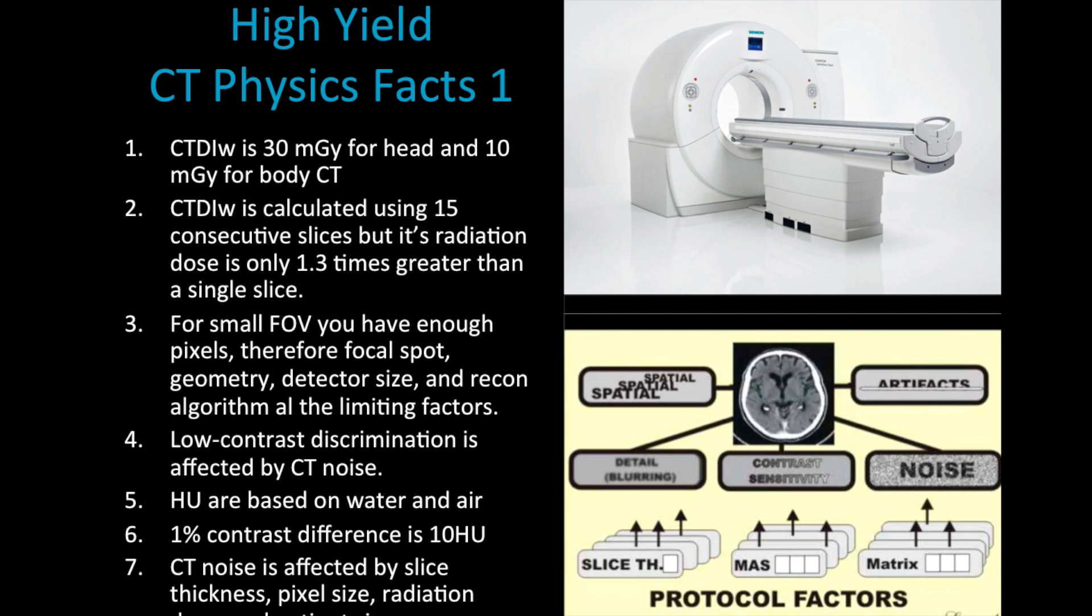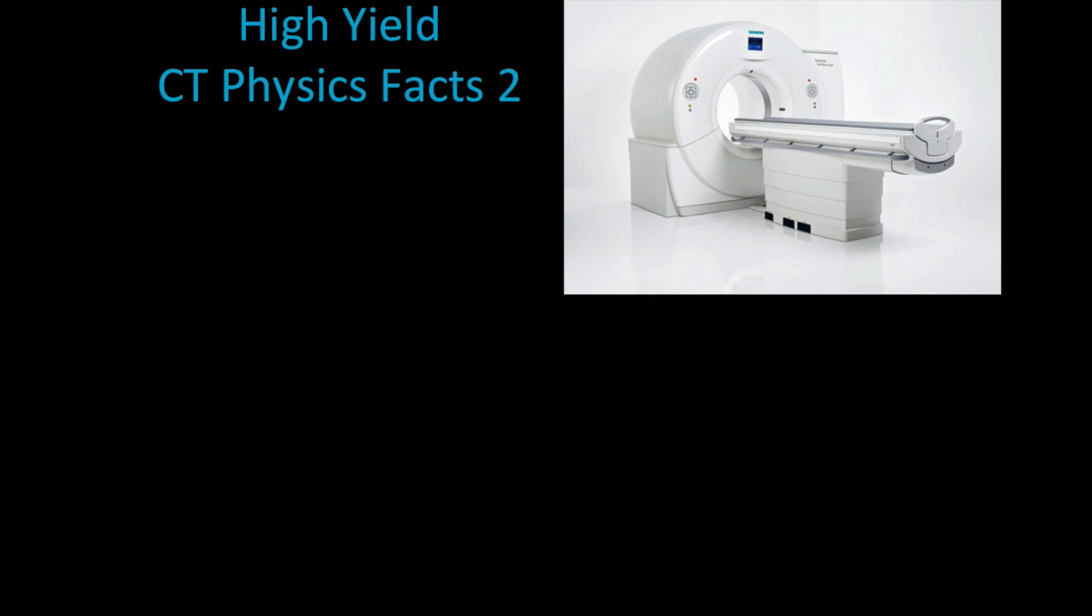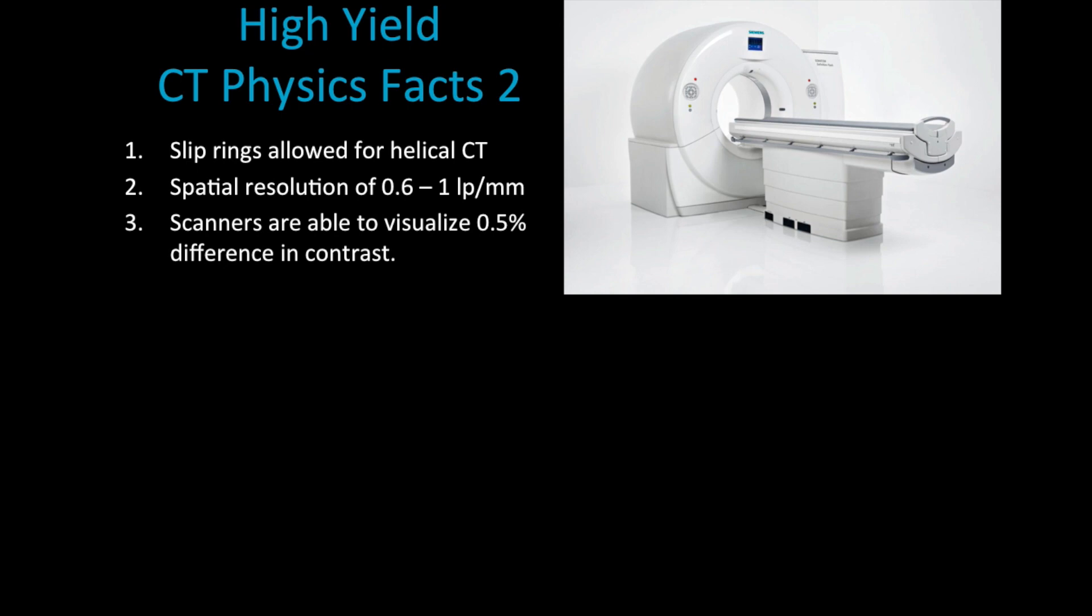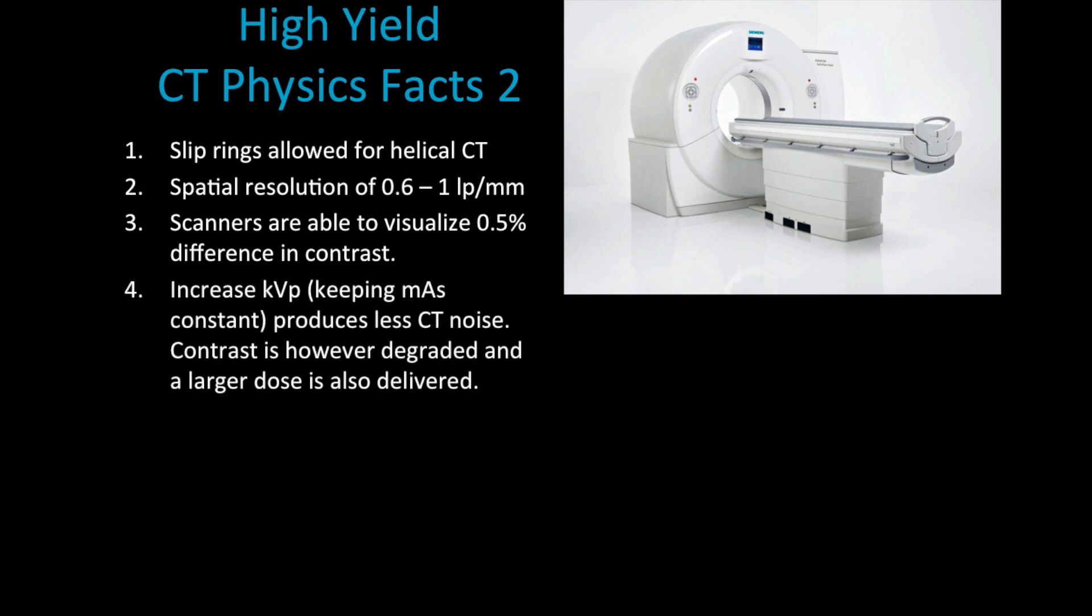Slip rings allowed us to create helical CTs because we removed or eliminated the need of some of the wiring that was required before. The spatial resolution for CT is from 0.6 to one line pairs per millimeter, and this is really low when we compare it to other modalities in radiology. But it shows you that the real importance of CT is in contrast resolution. Scanners are able to visualize 0.5% difference in contrast between two objects.